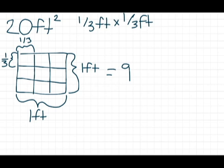The fraction of a square foot of one tile would mean one square foot and that would be one third times one third which would give me my area, my length times width, which is one ninth of a foot square.